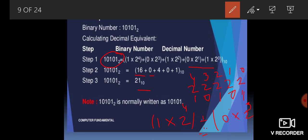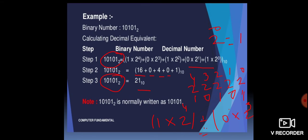4 multiplied by 1 gives 4. And any number raised to the power 0 equals 1, so 2 raised to the power 0 is 1, multiplied by the digit 1 gives 1. Now adding: 16 plus 4 equals 20, and 20 plus 1 equals 21. So this binary number 10101 has been converted to the decimal number 21.